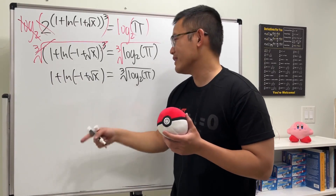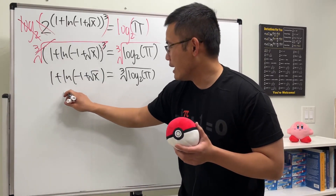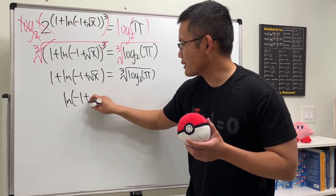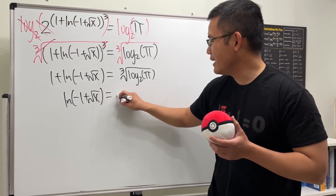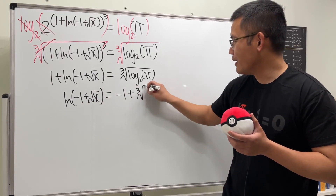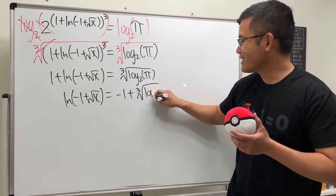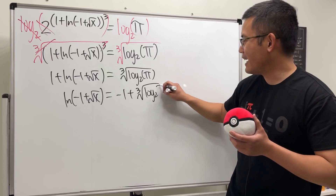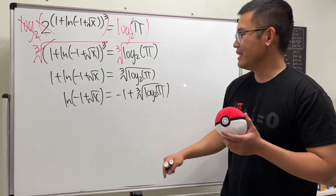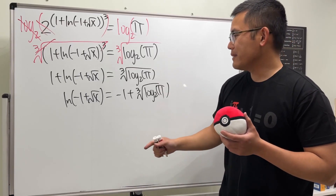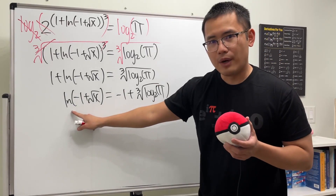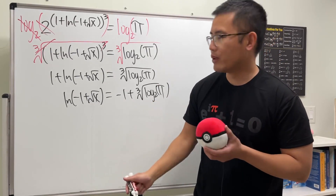Next, move the one to the other side, so we get ln of negative one plus square root of x equal to negative one plus the cube root of log base 2 of pi. We'll keep the parentheses. Now to get rid of the ln, we raise e to the power on both sides.